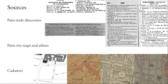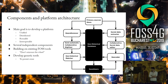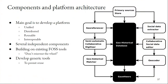We have many old sources: Paris trade directories, Paris city maps and atlases, and some cadastres. The goal is to build a platform composed by several independent components. We are going to build this platform on free and open source tools — not only geospatial, but always FOSS. We don't want to reinvent the wheel. We plan to develop six main components called: georeferencer, social data extractor, semi-automatic collaborative digitizer, collaborative social data editor, a geohistorical matcher, and a geocoder.